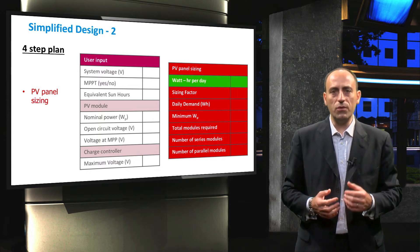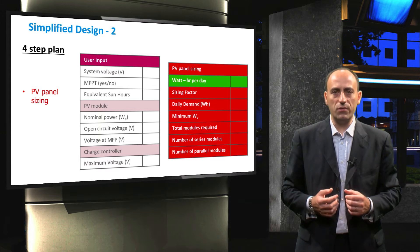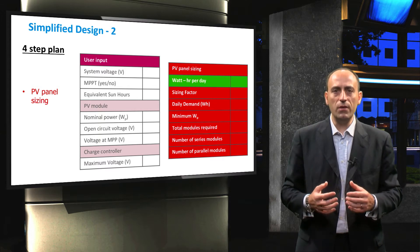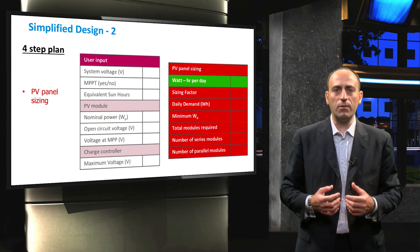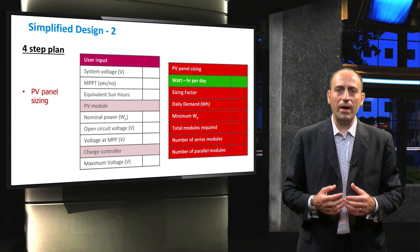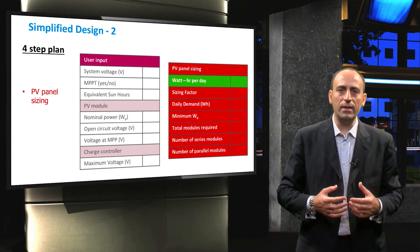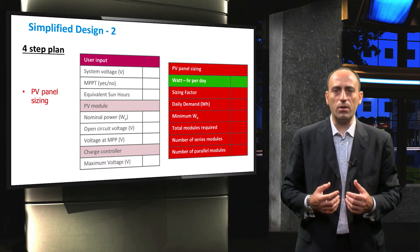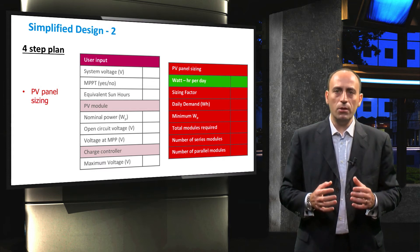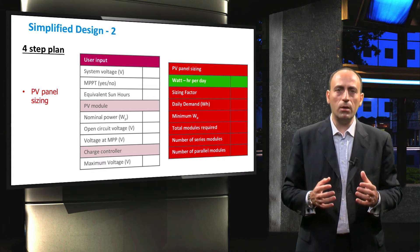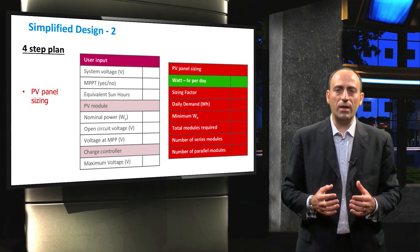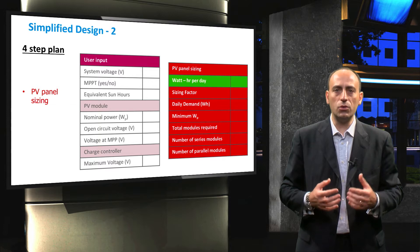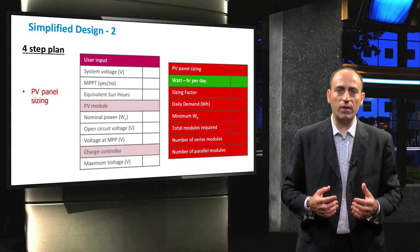The product of the load demand and the sizing factor is called the daily demand of the PV system. Just like with the first simplified strategy, we determine the minimum Watt-peak requirements of the PV system by dividing the daily demand by the number of equivalent sun hours of that location. The minimum PV system Watt-peak value corresponds to the total PV module Watt-peak that must be installed.